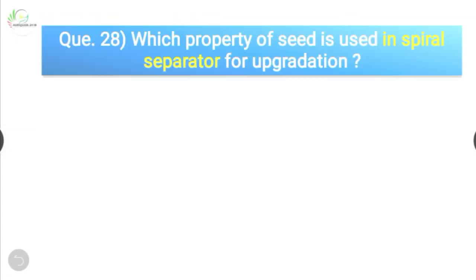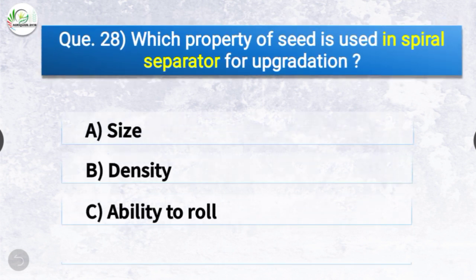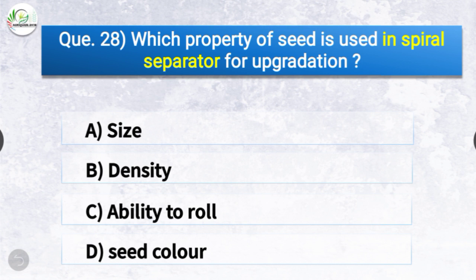Question number twenty-eight: Which property of seed is used in a spiral separator for upgradation? The options are size, density, ability to roll, or seed color. The correct answer is option C — ability to roll. Ability to roll is the property of the seed used in a spiral separator for upgradation.